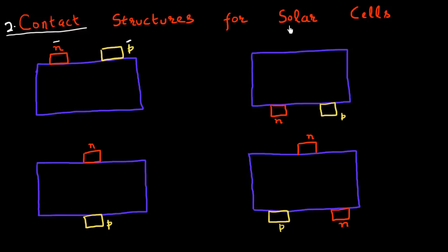I can distinguish these solar cells based upon how these contacts are oriented with respect to the incoming light. Let's say the light is coming from the top in all cases. I can classify these solar cells into four types.